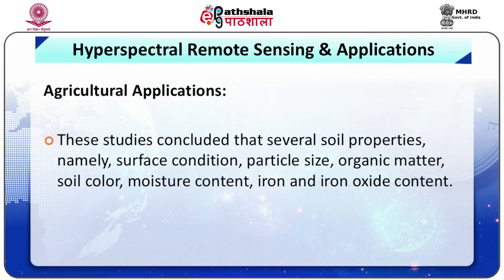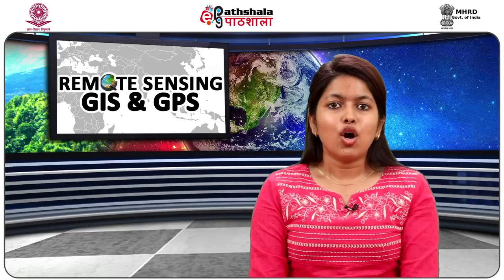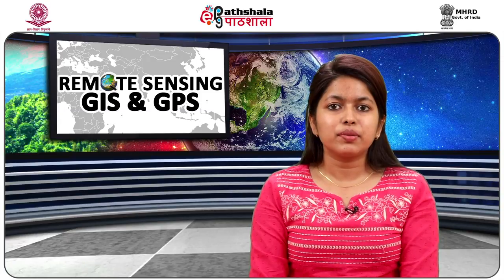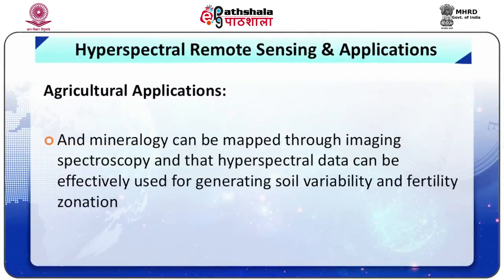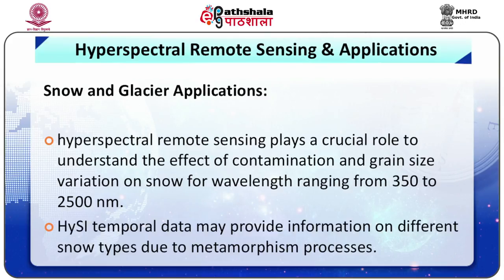Studies identified hyperspectral indices for leaf area index and plant nitrogen estimation, optimum bands for tea crop identification, and optimum bands and important indices for crop residue study. For soil science, hyperspectral data were used for soil fertility parameter retrieval and mapping, soil variability mapping and fertility zonation, and estimation of soil parameters like bulk density, nitrogen, phosphorus, etc.